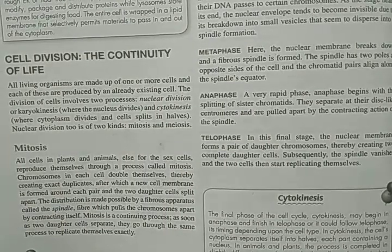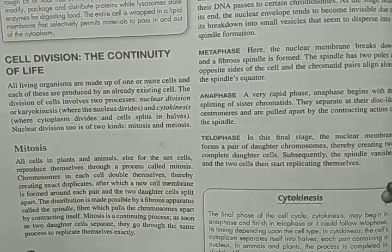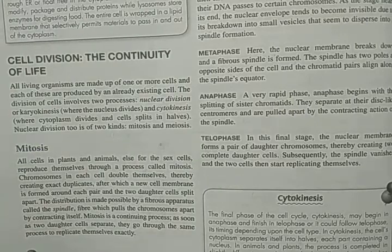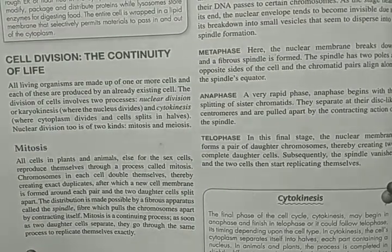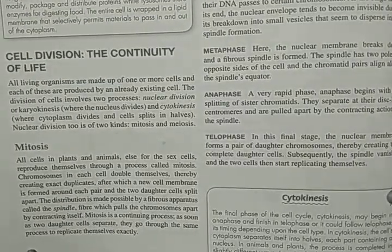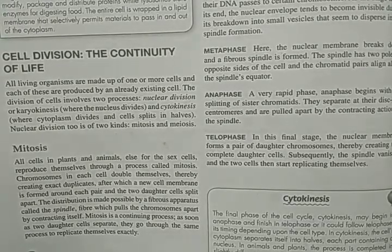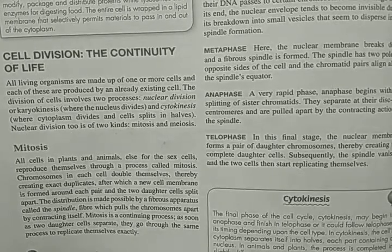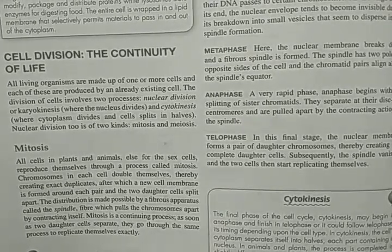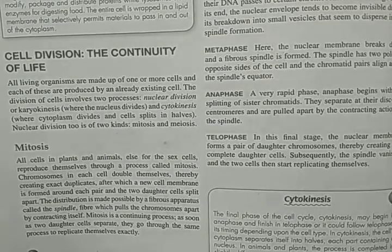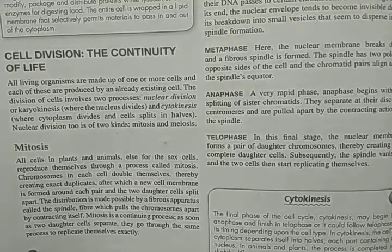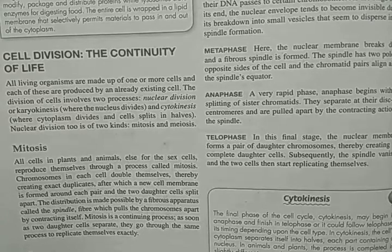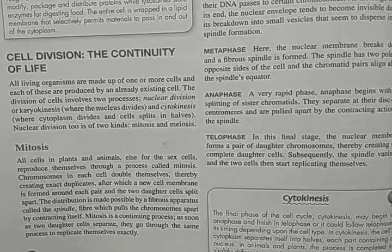What is mitosis? All cells in plants and animals, except for the sex cells, reproduce themselves through a process called mitosis. Chromosomes in each cell double themselves, thereby creating exact duplicates. A new cell membrane is formed in each resulting cell. The distribution of chromosomes is made possible by a fibrous apparatus called the spindle, which pulls the chromosomes apart by contracting itself.